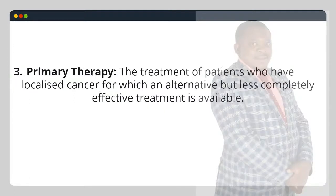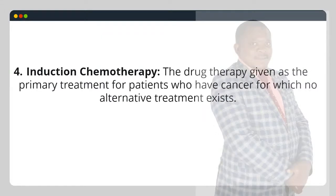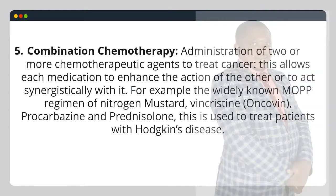3. Primary therapy: the treatment of patients who have localized cancer for which an alternative but less completely effective treatment is available. 4. Induction chemotherapy: the drug therapy given as the primary treatment for patients who have cancer for which no alternative treatment exists. 5. Combination chemotherapy: administration of two or more chemotherapeutic agents to treat cancer, allowing each medication to enhance the action of the other or to act synergistically with it.